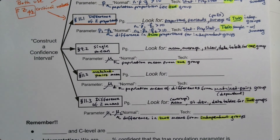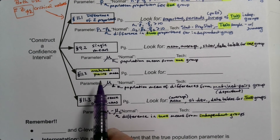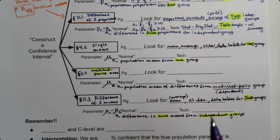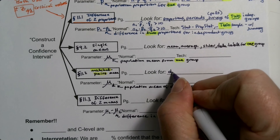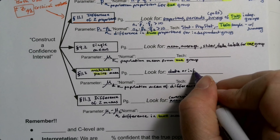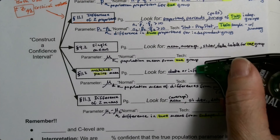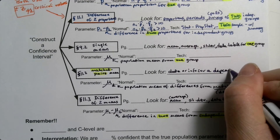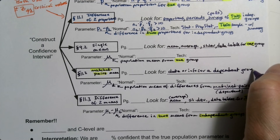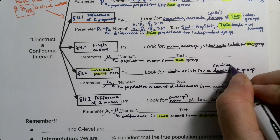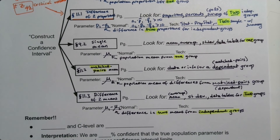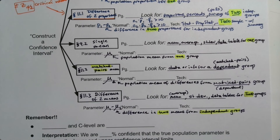The middle one — matched pairs — is special. If you see matched pairs data and you're asked to find a confidence interval, it can only be section 11.2. If you see a dependent group, aka matched pairs, that's the only thing we know to do with dependent groups. The data might be a table or given information, but the key is identifying it as a dependent, matched pairs design.